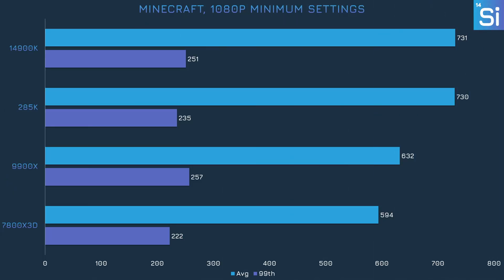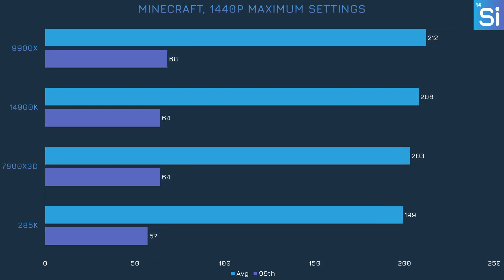With all graphics settings reduced as much as possible, Minecraft doesn't particularly like AMD CPUs. The 285K and 14900K tied in average frame rate, but the 285K is a bit behind in the 99th percentile. When all settings are maxed out, the 9900X takes the lead and the 285K falls into last place, though all CPUs performed roughly the same.